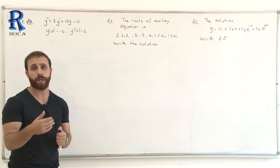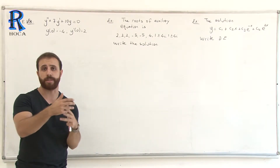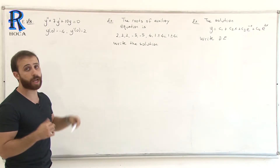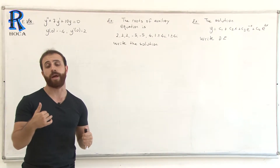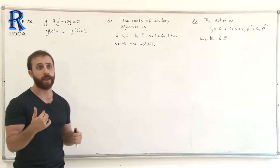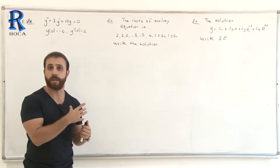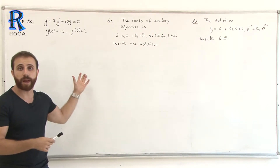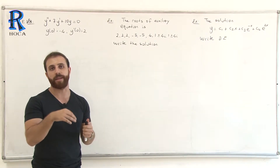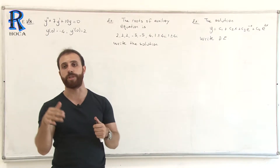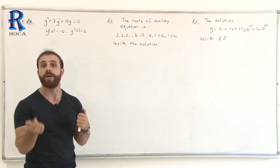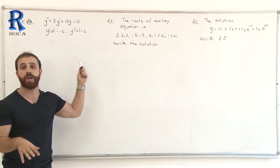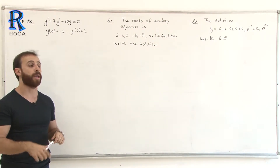In first-order differential equation methods we learned — exact, separable, homogeneous — we know that if we have certain initial information in the equation, they are called initial value problems. Why do we use this type of information? To find the integral constant C. Here we will have C1, C2, and so on written as exponentials. We can find all those constants if we have some initial values for y.